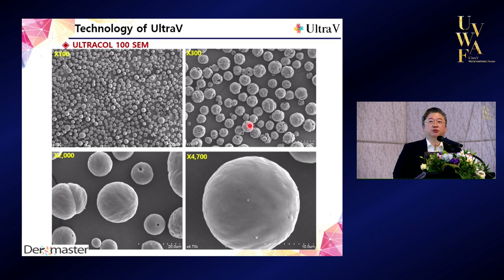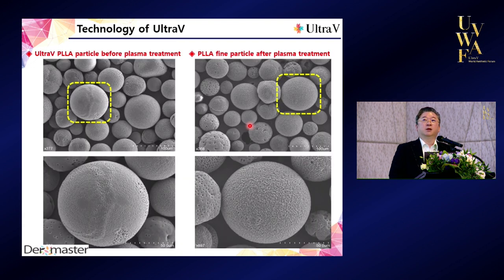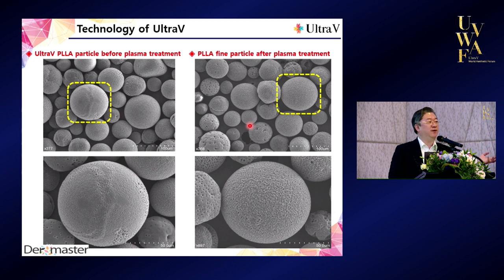This is a microscopic picture of UltraCol — you can see it has a beautiful round shape. You can see it 300 times enlarged, 2,000 times enlarged, and 4,700 times enlarged — a beautiful round shape. Actually, Ultra V already had a PLLA product in beautiful round form five to six years ago.